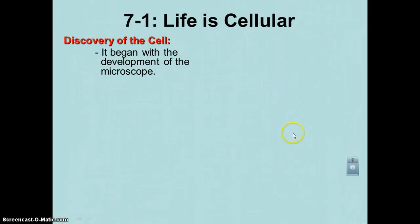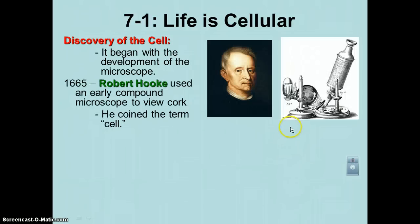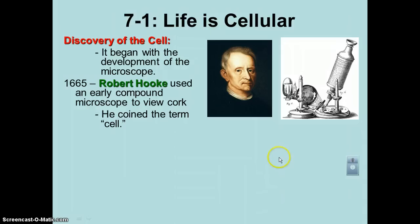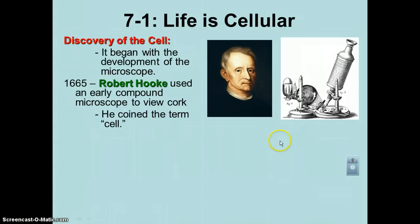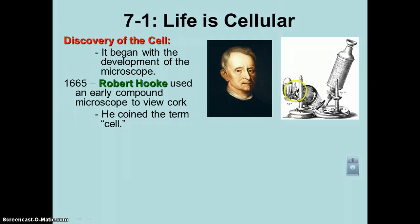The discovery of the cell began with the development of the microscope, which was beginning to come of age during the 1500s and early 1600s. Our knowledge of the cell begins with a British scientist named Robert Hooke. In 1665, he used a very simple early compound microscope to look at cork cells trimmed from a wine bottle. This is an example of his microscope. He used a flame as his light source because they didn't have electricity.